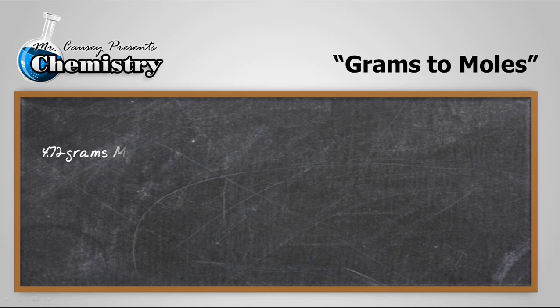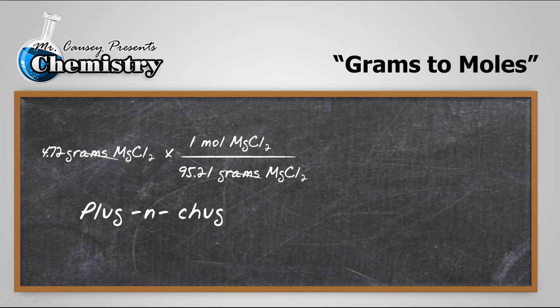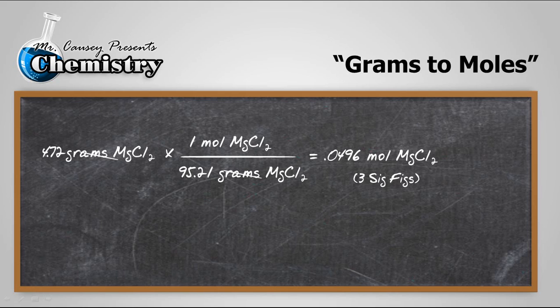Next step is to change our grams to moles, and we do that by multiplying by molar mass, and make sure that you put molar mass in such a way that grams cancel out. Take it and plug and chug, and we'll get 0.0496 moles of magnesium chloride, and that'll have three sig figs.